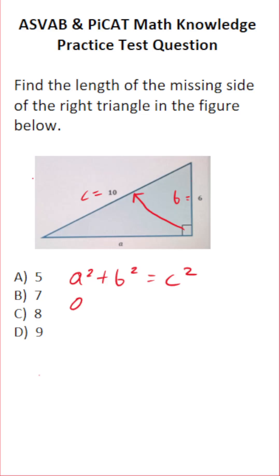Again, we're solving for a so we'll leave that as is. We know b is 6 so this is 6 squared, and c as I just pointed out is 10 so this is 10 squared. All right, let's go ahead and work this out.